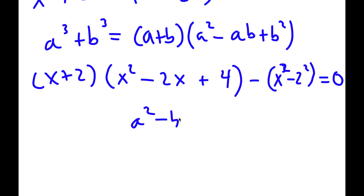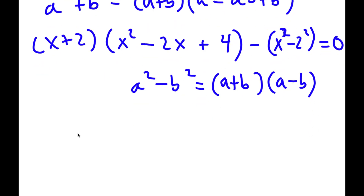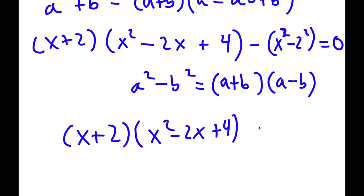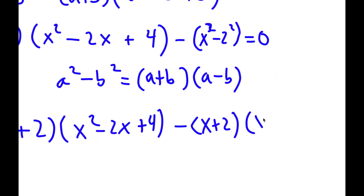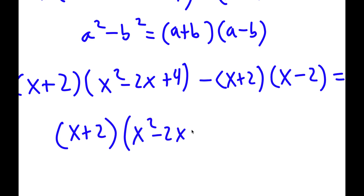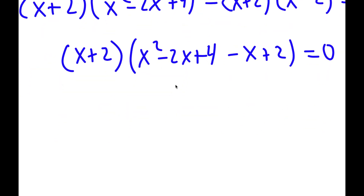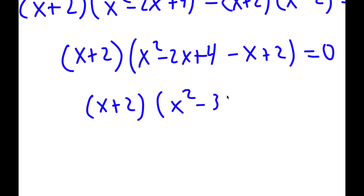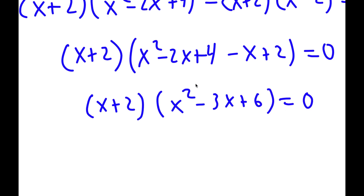Now using a squared minus b squared equals a plus b times a minus b, x squared minus 2 squared factors into x plus 2 times x minus 2. After simplification, this gives x plus 2 times x squared minus 3x plus 6 equals 0.